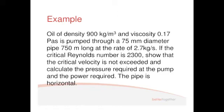It says if the critical Reynolds number is 2300, show that the critical velocity is not exceeded. The critical velocity of flow is simply that velocity at which the critical Reynolds number is reached. So what we need to do is use the given information to calculate the Reynolds number and show that it is less than 2300.